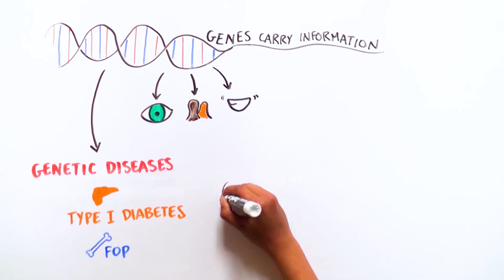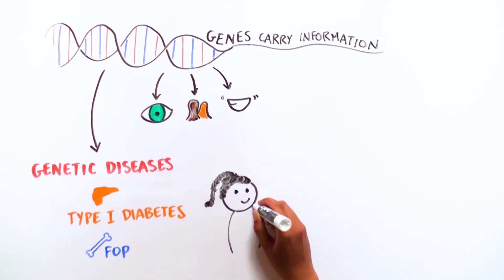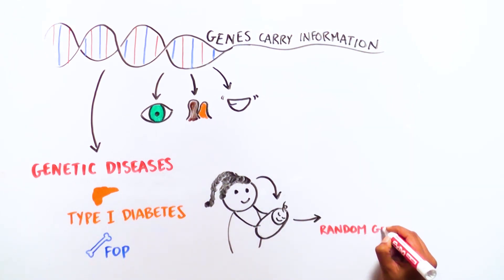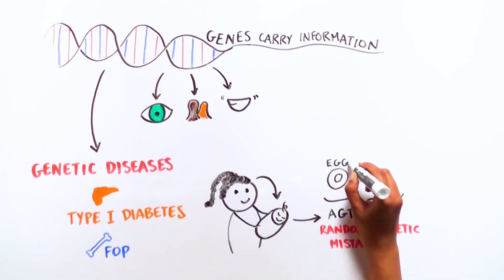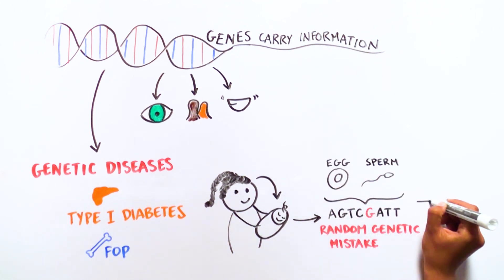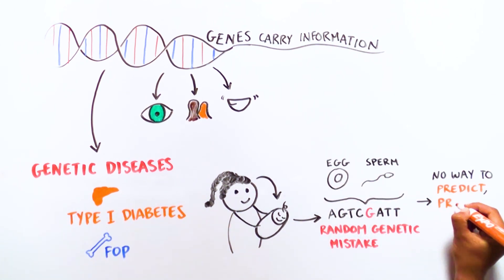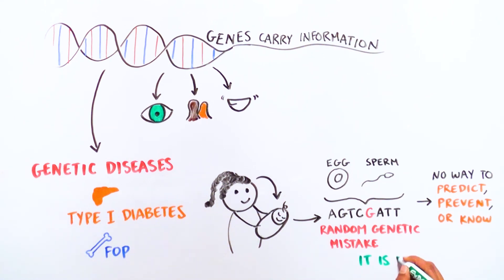While FOP can be passed down by a parent with the disease, it is most often the result of a random genetic mistake in an individual sperm or egg for the first time. There is no way of predicting, preventing, or knowing whether this will happen. It's no one's fault.